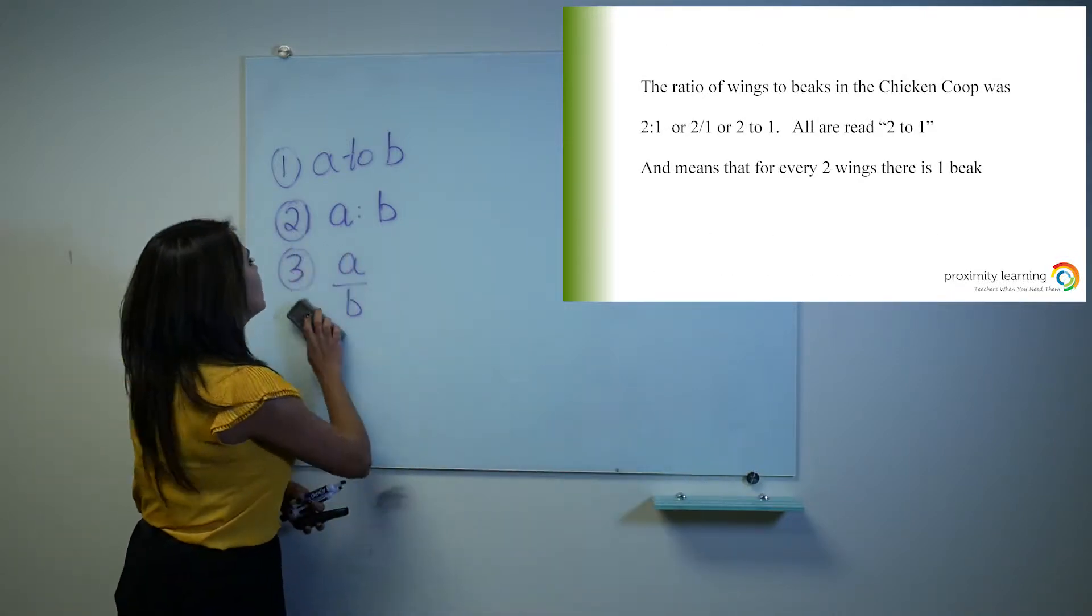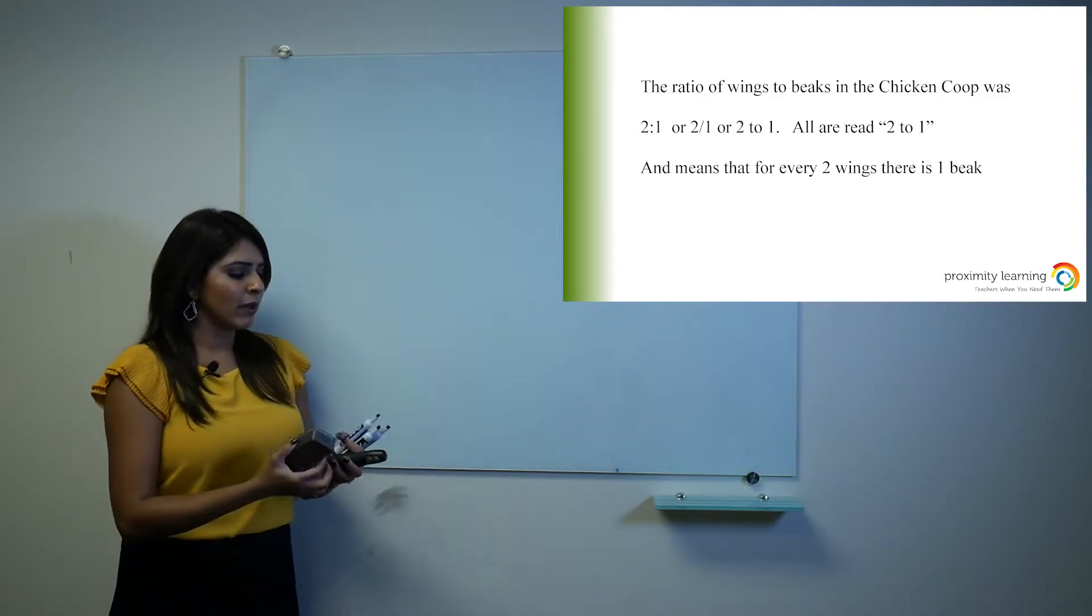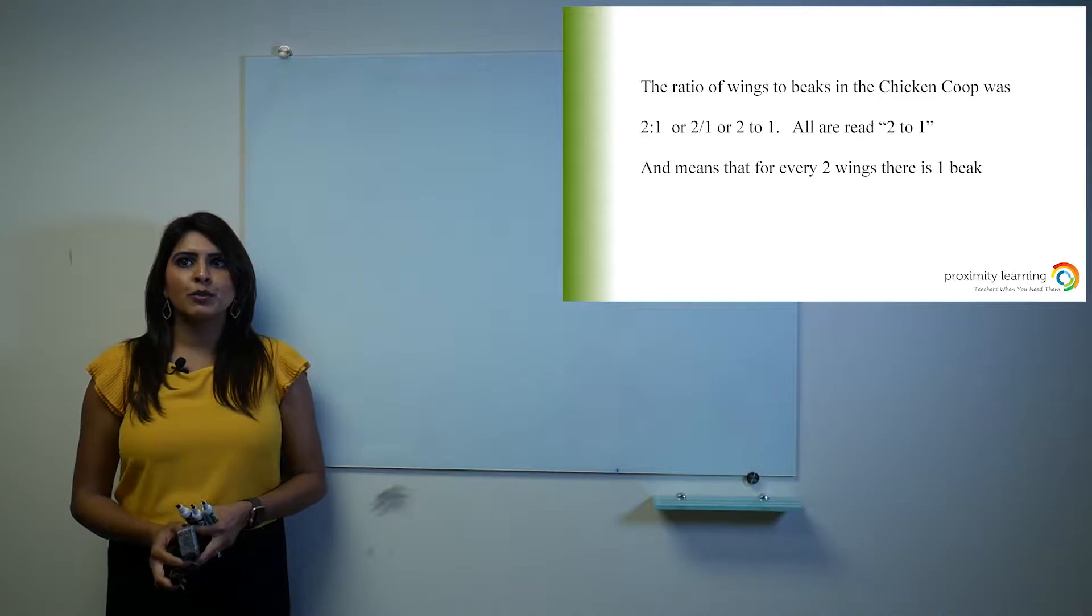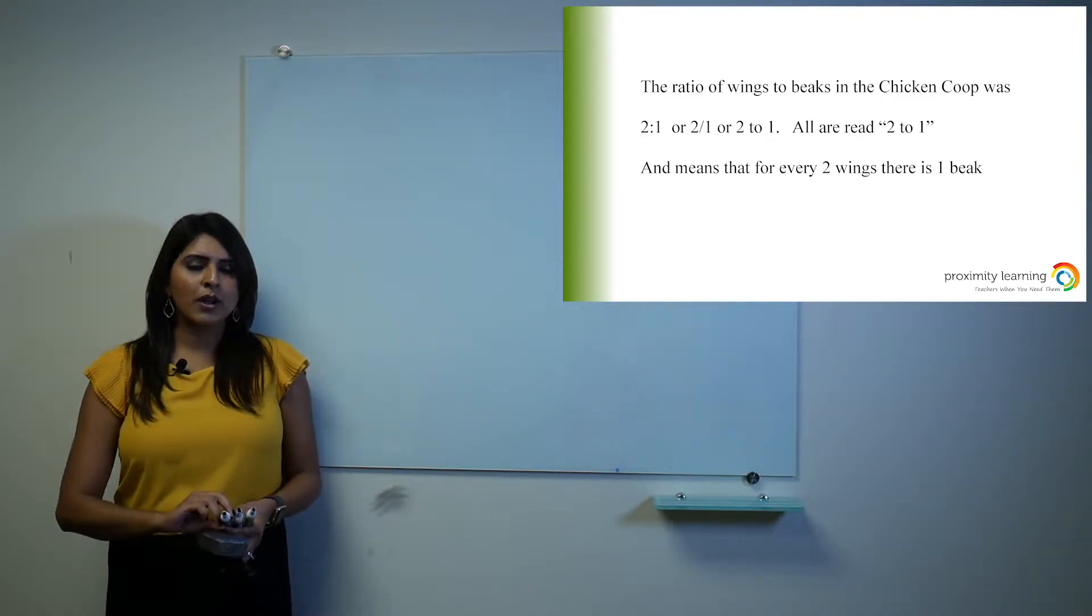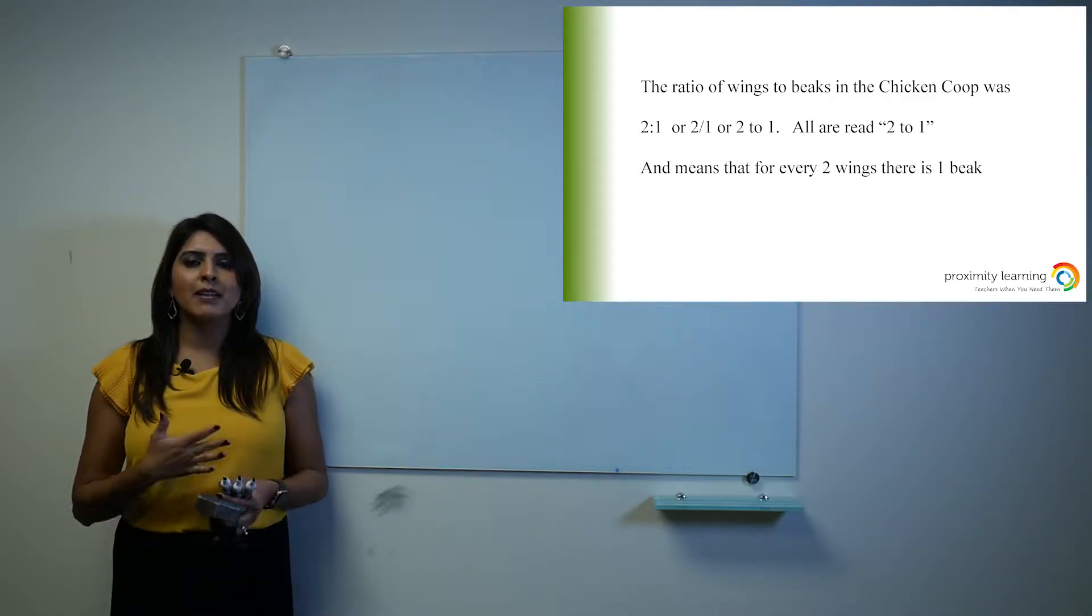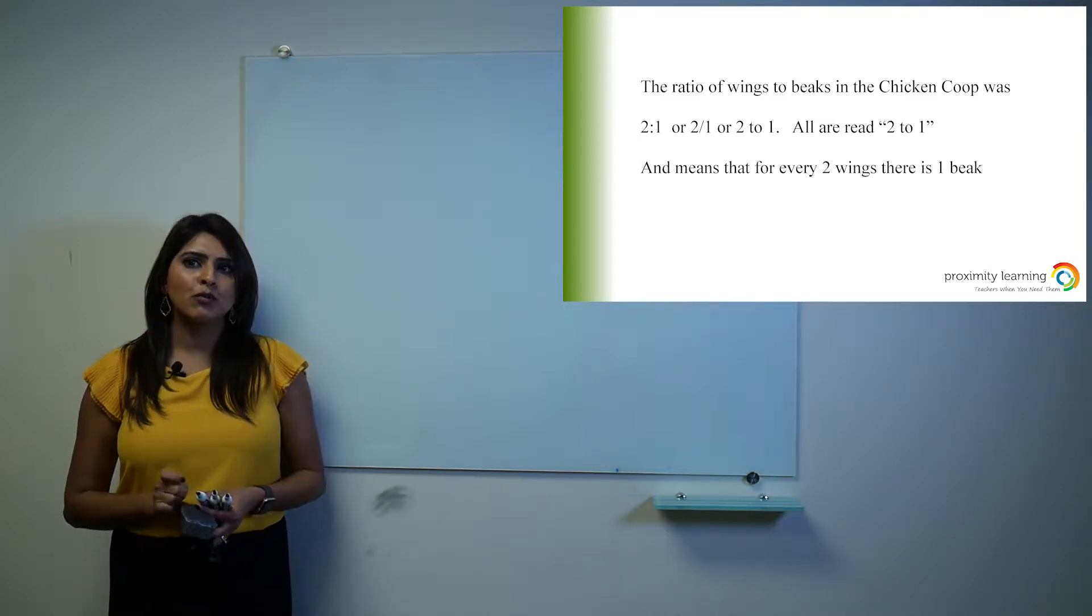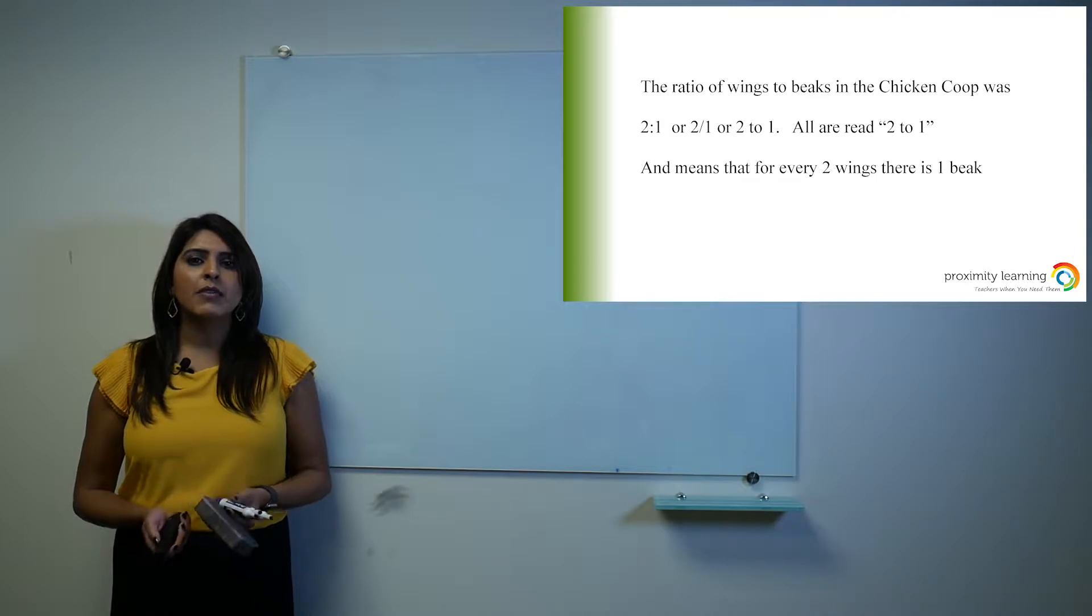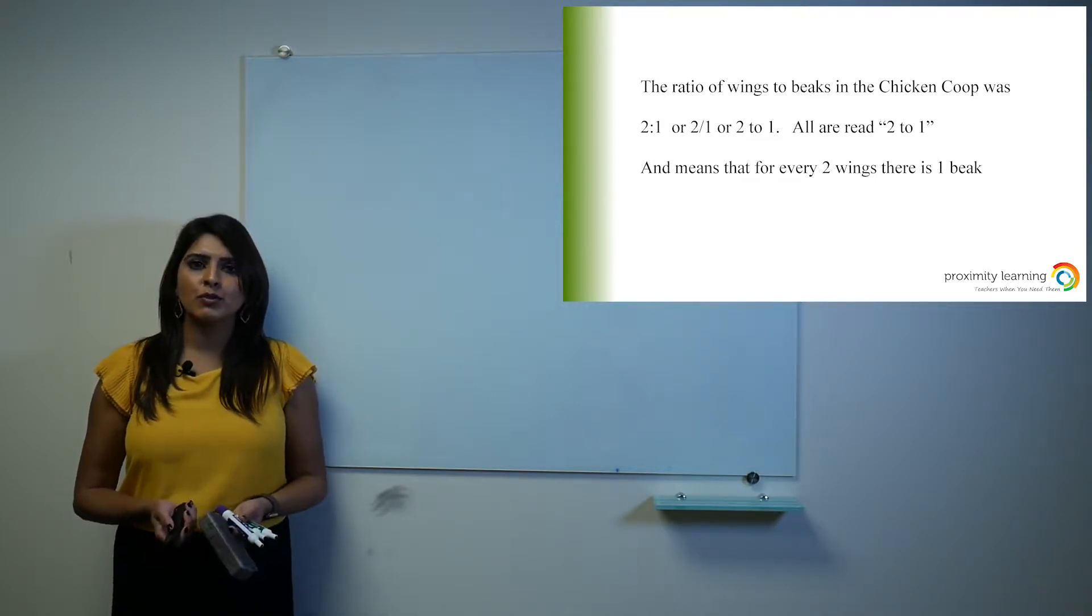So here is an example of a ratio that utilizes numbers. The ratio of wings to beaks in the chicken coop was 2 to 1, or 2 over 1, or 2 colon 1. Regardless of how it's written, you will always read it as 2 to 1. And all that means is that for every two wings, there is one beak. So you are comparing the two quantities there.